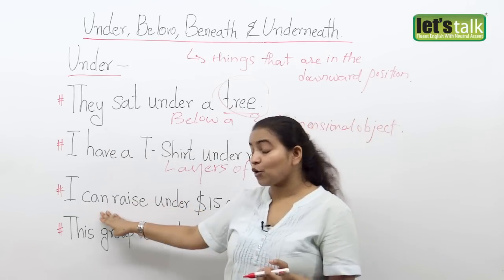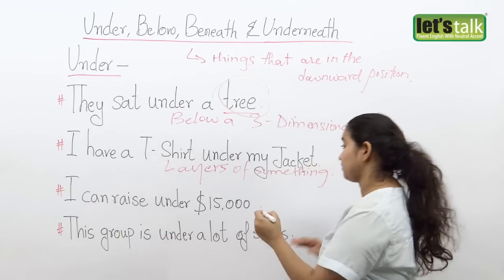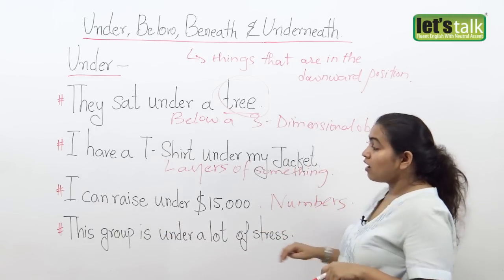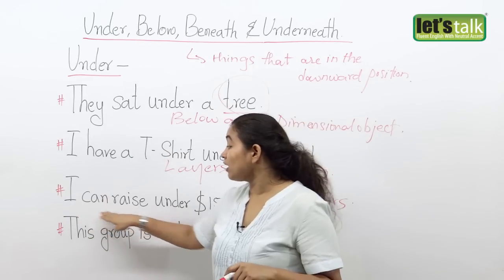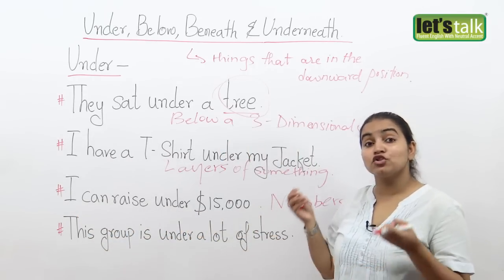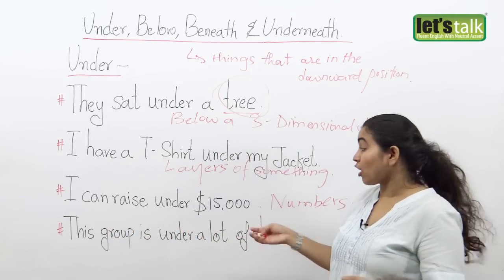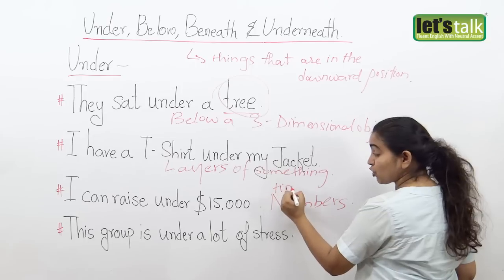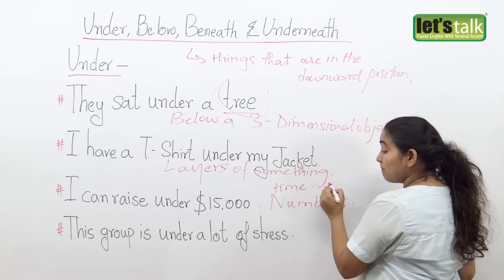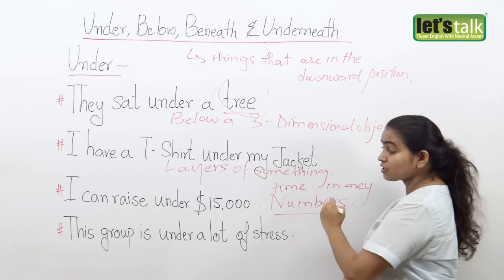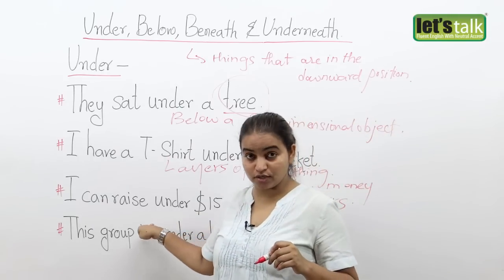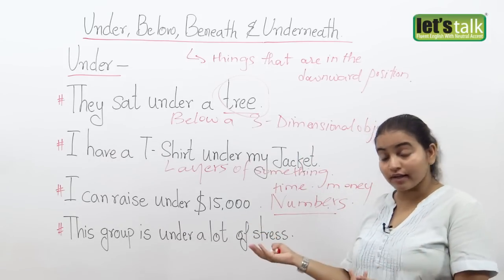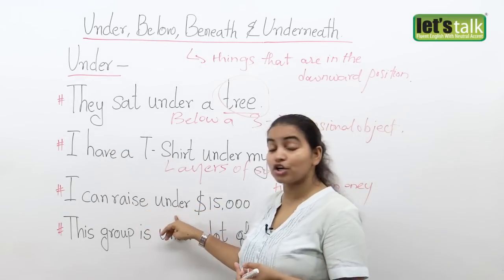I could also use under when I am talking about numbers. So I will say: I can raise under fifteen thousand dollars, or I can do it under seven hours. So if I am talking about time, which is also numbers, or money, which is again numbers, I will use the word under. So: I was under seventeen when I learned to drive — that's again when you use the word under.